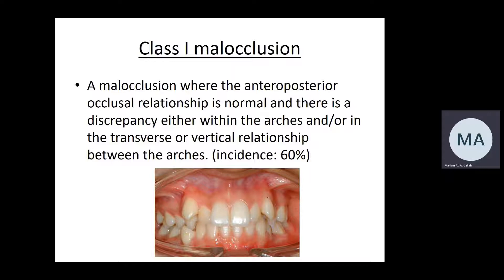On the other hand, class 1 malocclusion is when the anterior-posterior relationship is still within normal, but the problem lies within the arches themselves, or when we have transverse or vertical discrepancies between the arches or within the skeletal pattern. This accounts for 60% of all malocclusions, meaning the majority of malocclusions in the population is categorized as class 1.